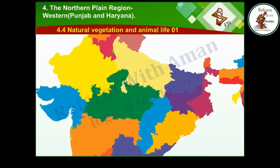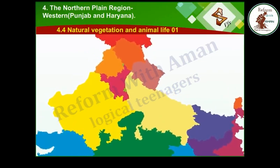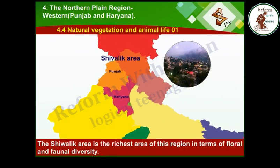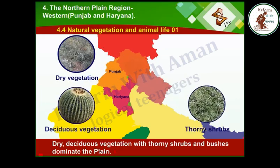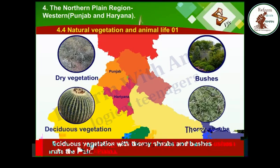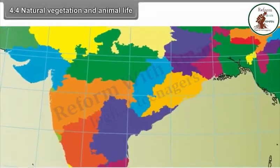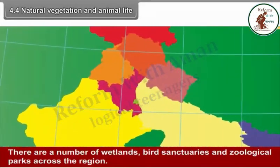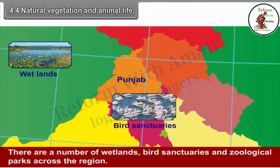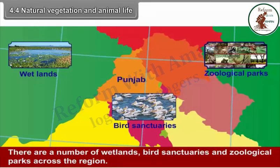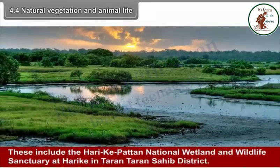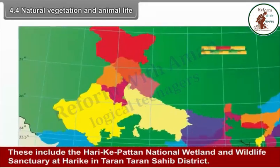4.4 Natural Vegetation and Animal Life. The Shivalik area is the richest area of this region in terms of floral and faunal diversity. Dry deciduous vegetation with thorny shrubs and bushes dominate the plain. Common trees include Eucalyptus, Pine and Kikar. There are a number of wetlands, bird sanctuaries and zoological parks across the region, including the Harike Pattan National Wetland and Wildlife Sanctuary at Harike in Tarn Taran Sahib District.